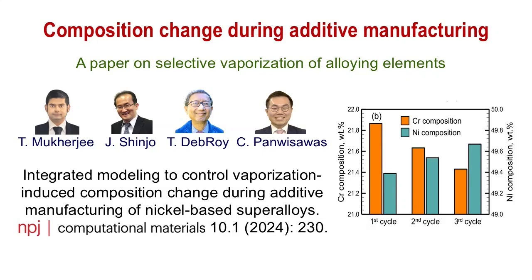Moreover, we quantify the relative vulnerabilities of different nickel-based superalloys to composition change quantitatively, and we examined the effect of remelting due to the layer-by-layer deposition during the laser powder bed process. Spatial variations in evaporative flux and compositions for each element were determined, providing valuable insights into the laser powder bed fusion process.